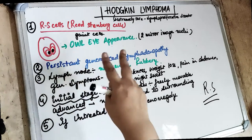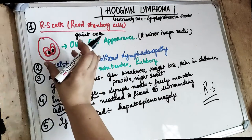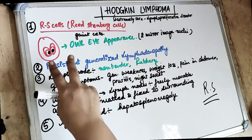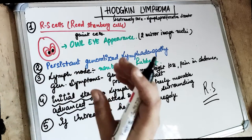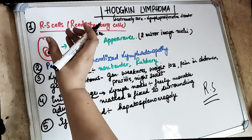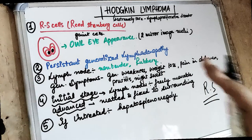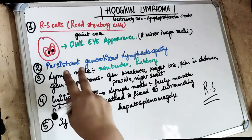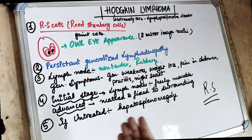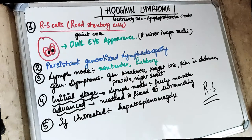This is the owl's eye appearance. These are the chief malignant cells in Hodgkin lymphoma. When we take a histological section, there are two mirror image nuclei which are seen. In Hodgkin lymphoma there will be proliferation of the malignant lymphoid cells — these are the Reed-Sternberg cells — and we will see that typical owl's eye appearance with mirror image nuclei.